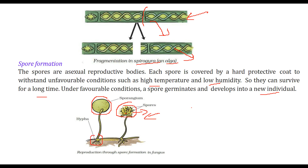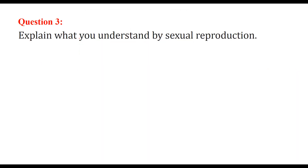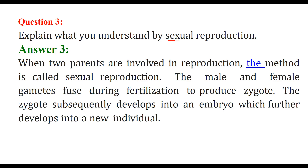Reproduction through spore formation is seen in fungus. In sexual reproduction, both male and female parts are required, meaning two parents are involved. The male and female gametes fuse together during fertilization to produce a zygote, which further develops into an embryo and then into a new individual.